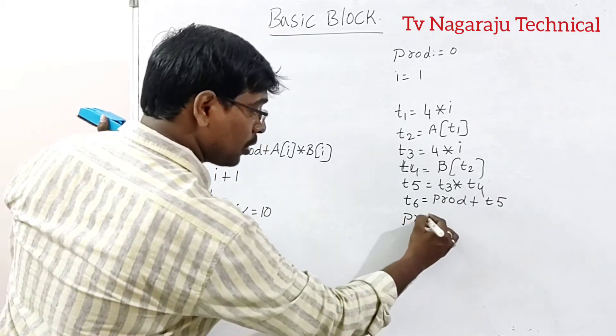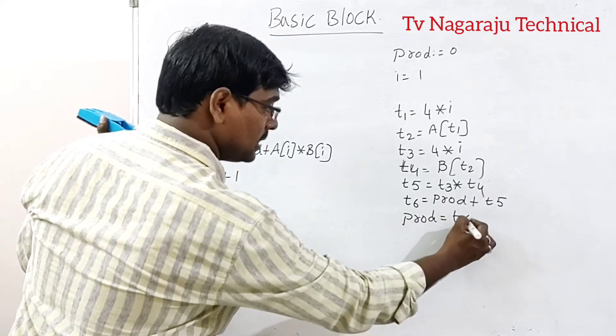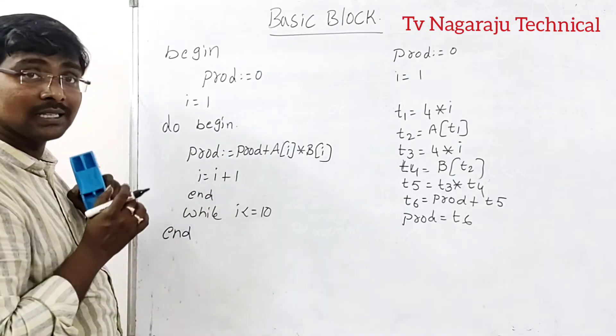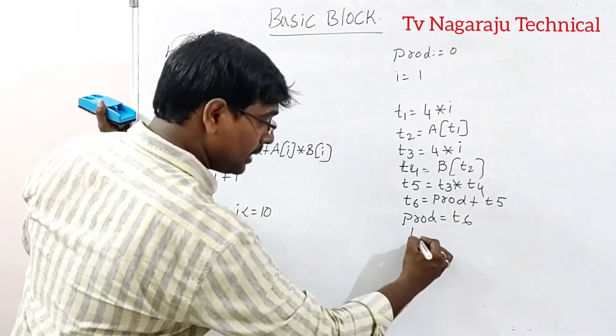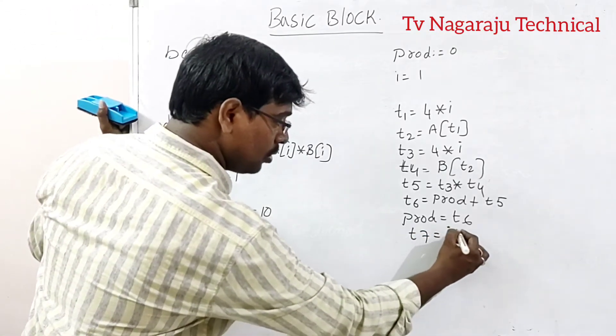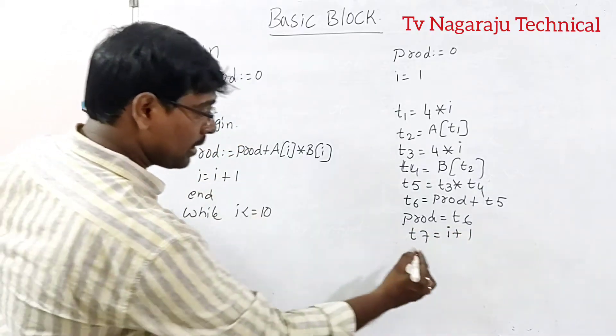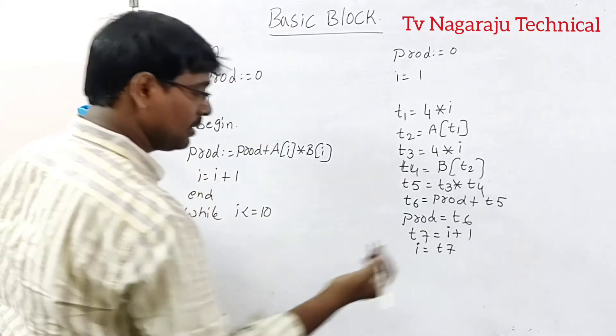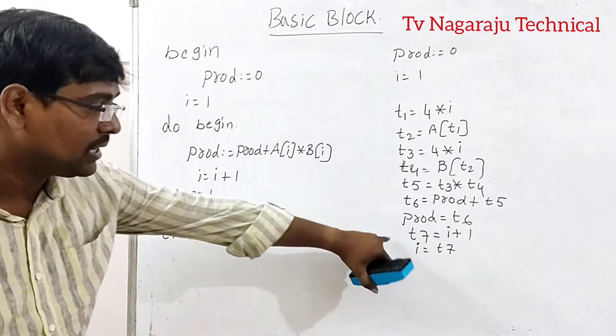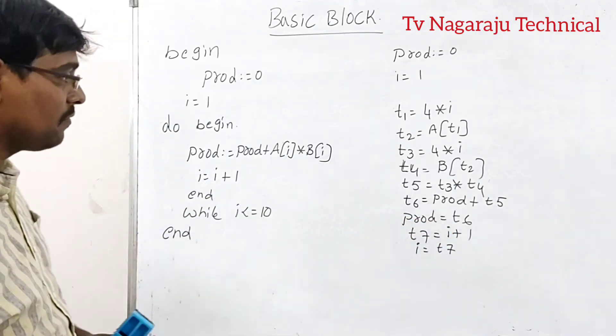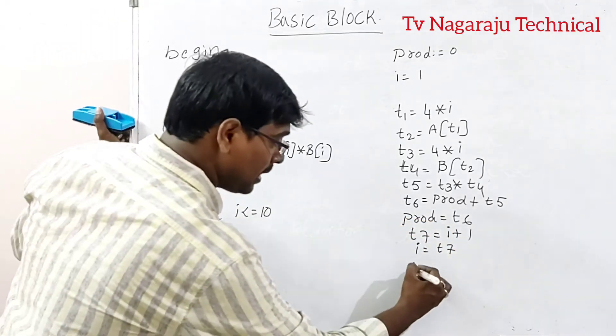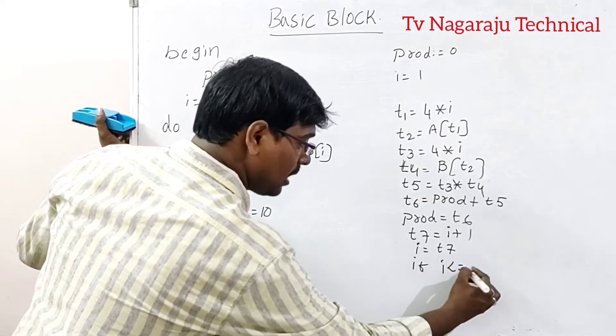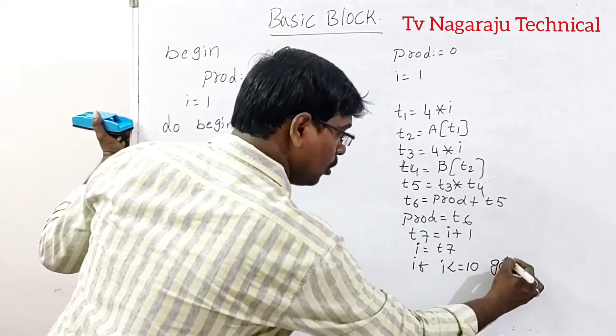Finally, product is equal to T6. Now this product consists of T6. T7 is equal to I plus 1. Now I is equal to T7. I is of T7, that is I plus 1 value. And then if I less than or equal to 10, go to.